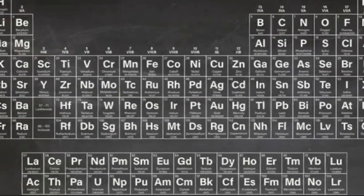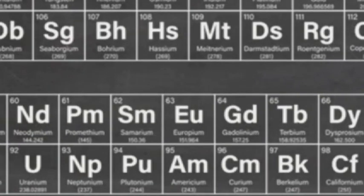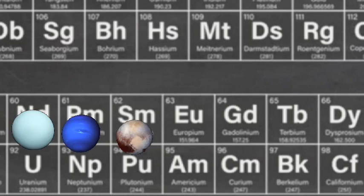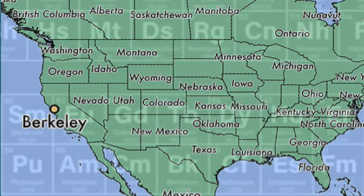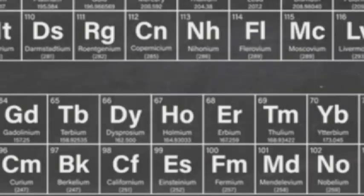There are some handy strings of elements where their names are going to help you out. If you know uranium is element 92, then you get three for the price of one, as neptunium is 93 and plutonium is 94. That's the order of the planets — well, until Pluto was demoted anyway. Berkeley being in California gives you elements 97 and 98: berkelium and californium.